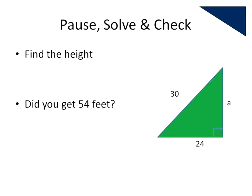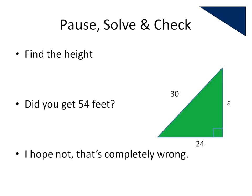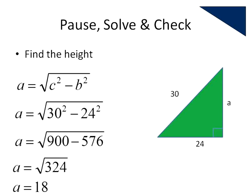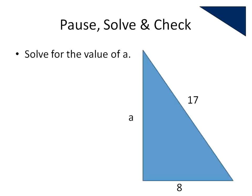Did you get 54 feet for your value of A? I sure hope not — it's completely wrong. That can't possibly be longer than the hypotenuse; anything longer than the hypotenuse wouldn't make any sense. The correct answer is that A is equal to 18. Here's the work: A equals the square root of C squared minus B squared. 30 squared minus 24 squared — 900 minus 576 gives us 324 — and the square root of 324 gives us 18. So there are all the steps.